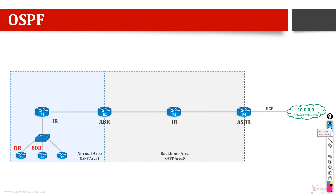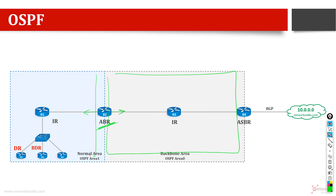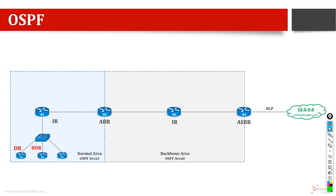The third type is called the area border router, or boundary router. This is a router which has one interface in one area and the other in at least another area — so minimum two areas. This type is called an area border router because it sits on the border of two areas. For example, router number two here.